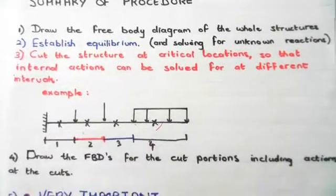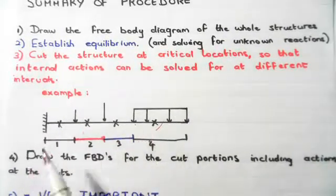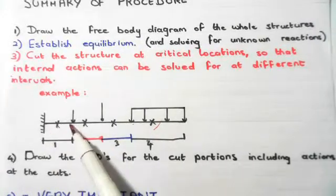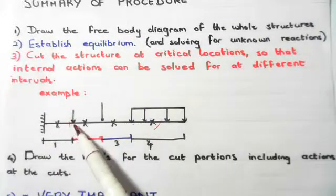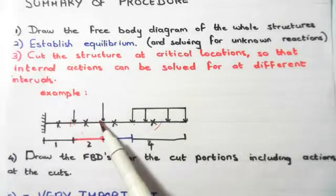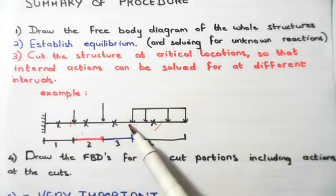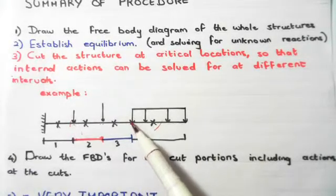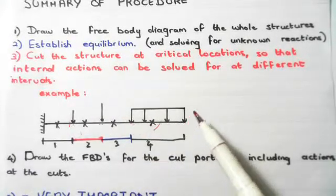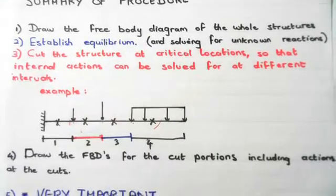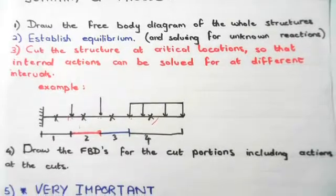The interval of the first cut is from the start to the first point load. The second cut interval runs to the next point load. The third cut runs from that point load to the beginning of the UDL. The fourth cut runs from the beginning of the UDL to the free hanging edge. The main thing to know is that whenever we have something new occurring — an external force — you take a new cut.